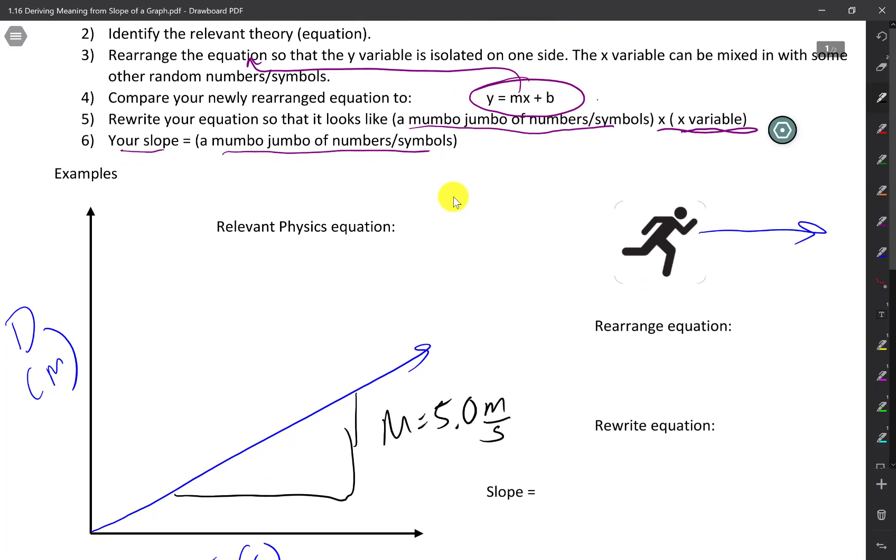Have your linear graph ready. Second step, identify the relevant theory. Well, you've seen this before, where the speed of something going at a constant speed is the distance over time. That's your relevant physics equation.